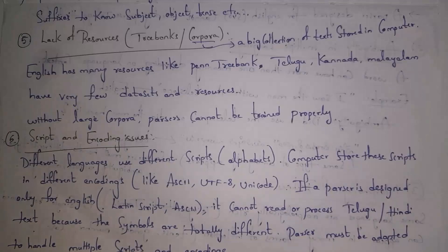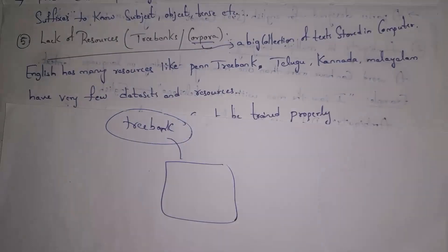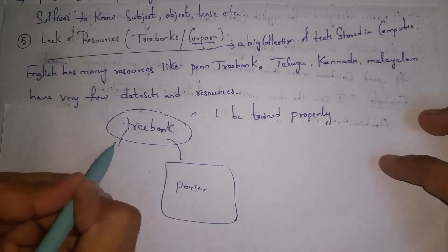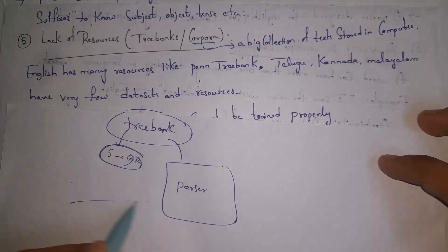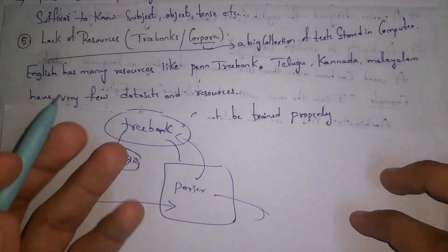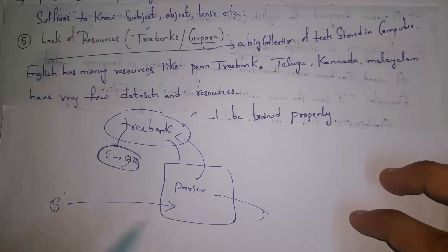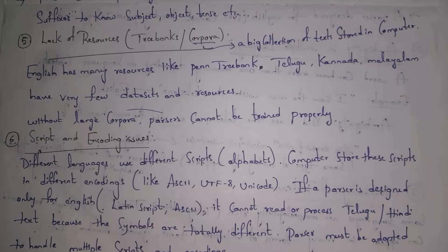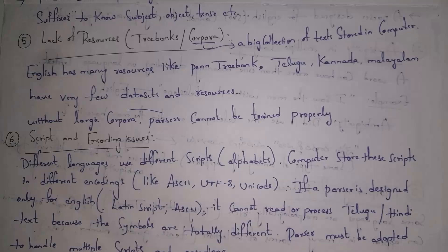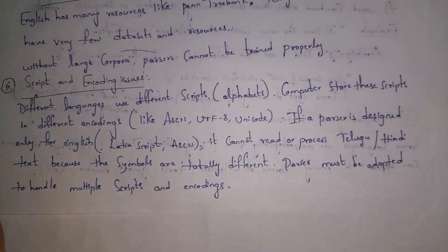The fifth issue is lack of resources. In English, there are many datasets containing various kinds of sentences and their grammar rules. For example, Treebank is a module in Python that contains various kinds of sentences and grammar rules. When given a complicated sentence, the parser uses Treebank to understand it and produce correct output. However, other languages like Telugu and Kannada contain only limited datasets compared to English, so without sufficient datasets we cannot train our parser properly.